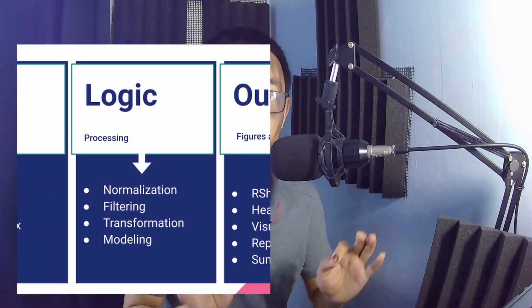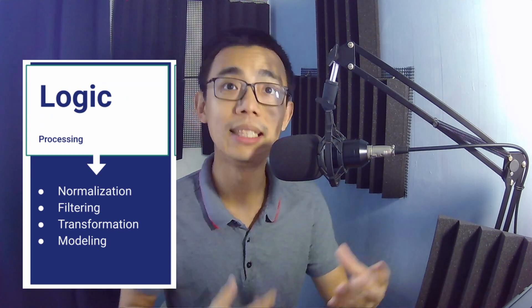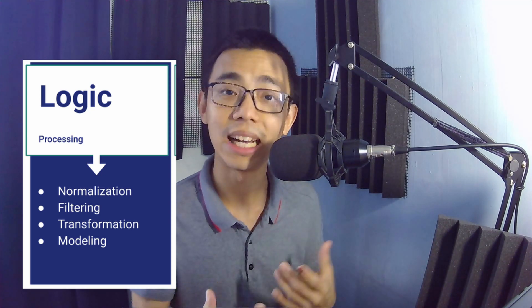Those input files go to the second section, which I call the logic or processing section. This contains all the R scripts that do all the normalization, filtering, transformation, and modeling of the data, as well as all the intermediate processing data that it would actually generate.